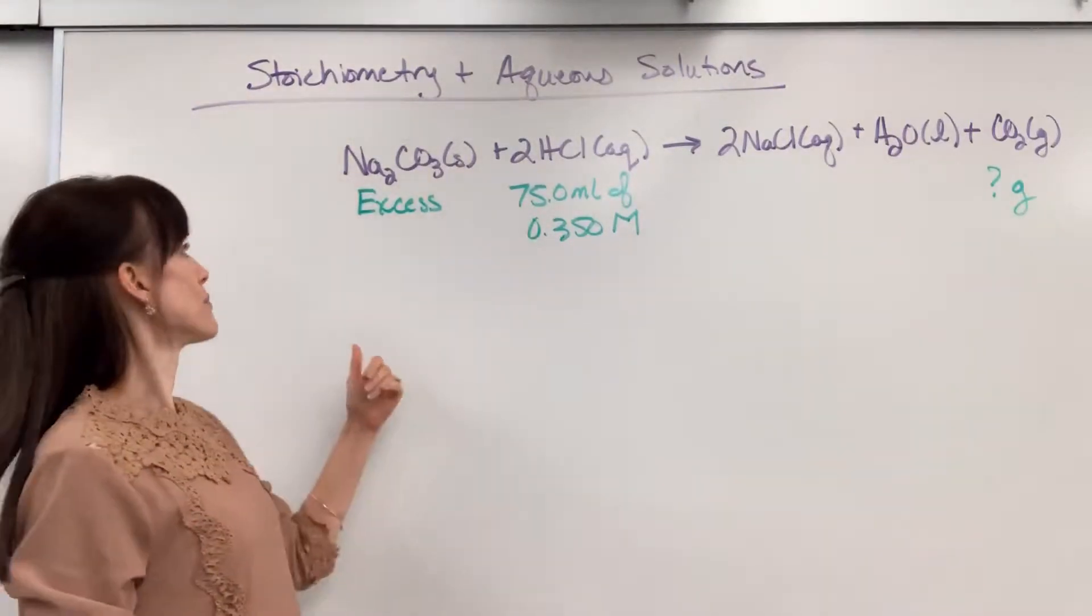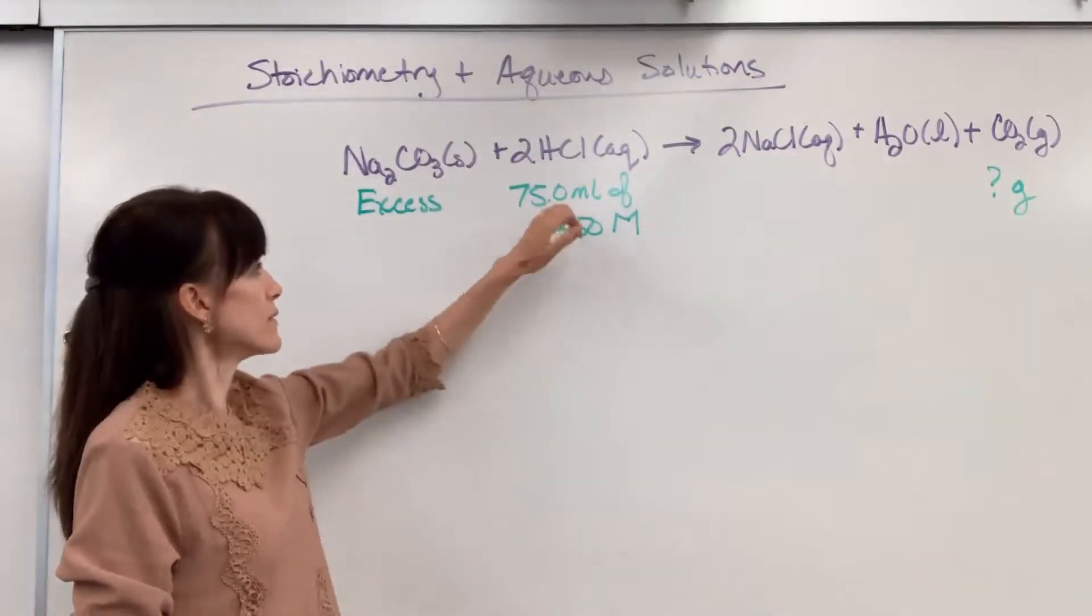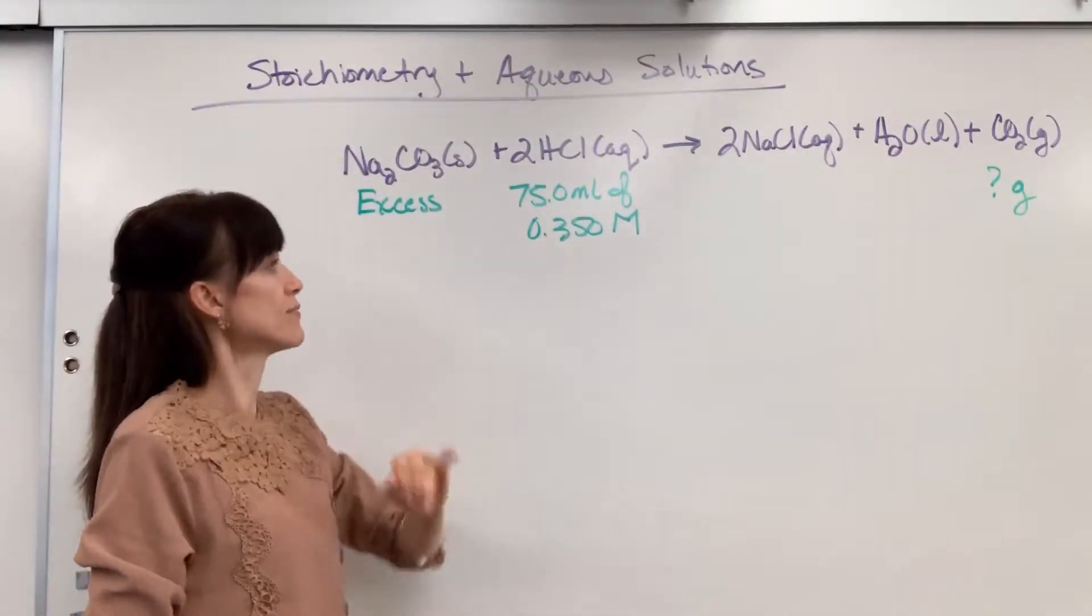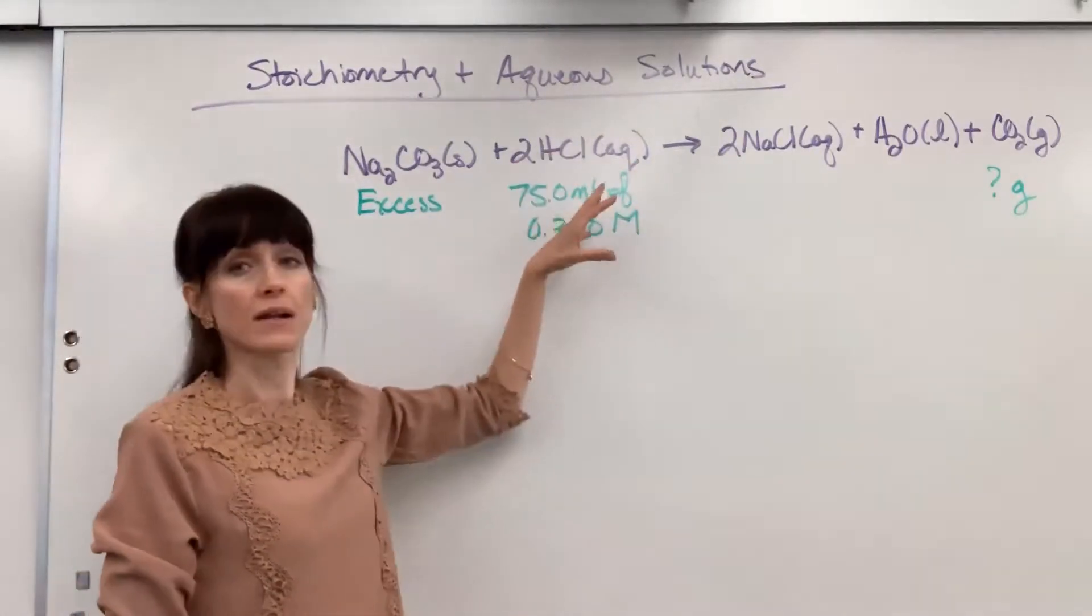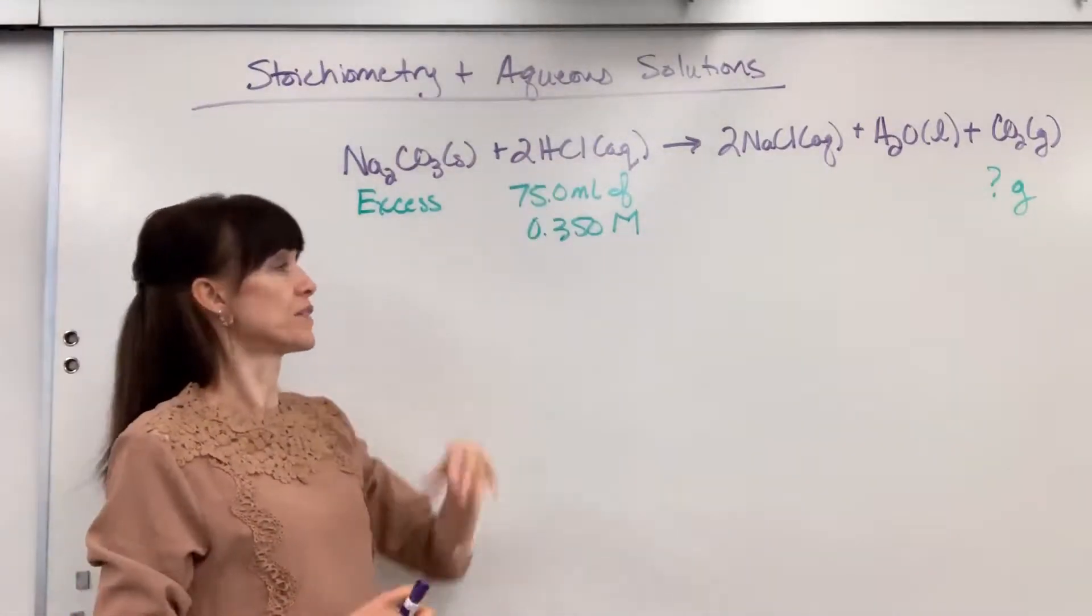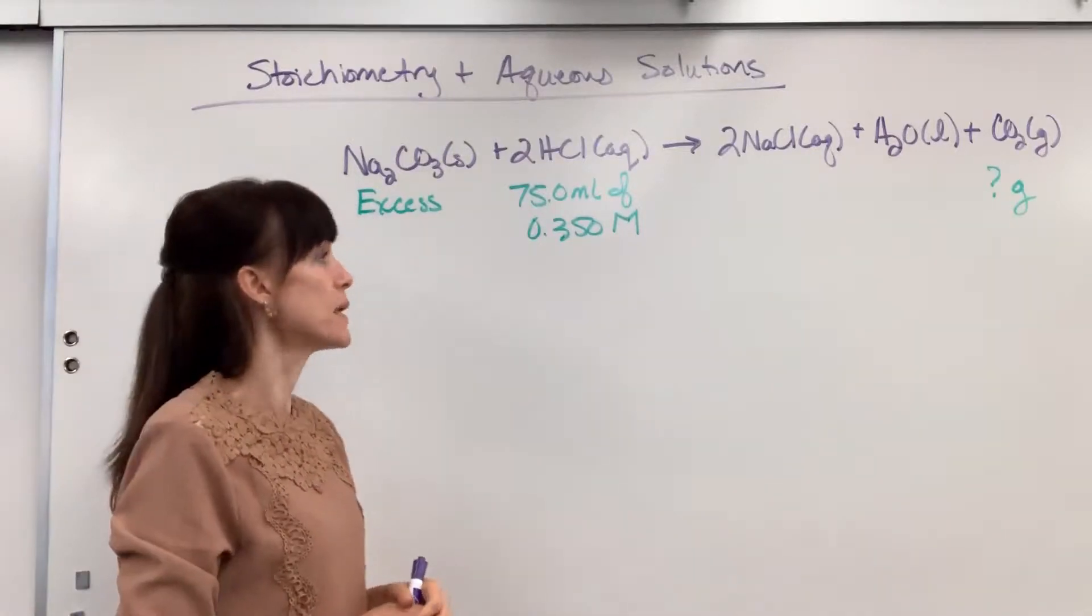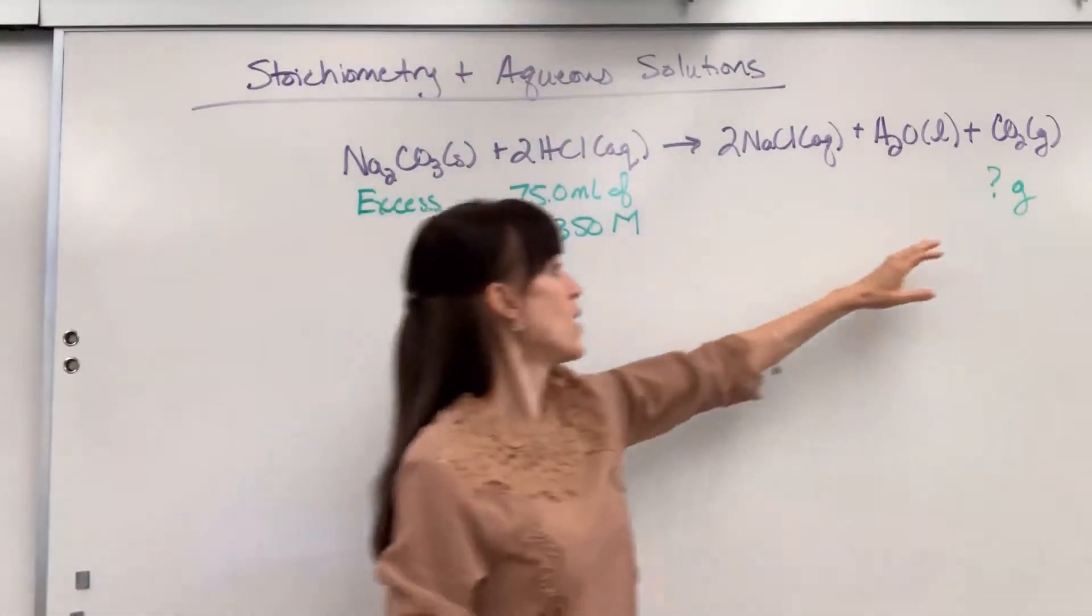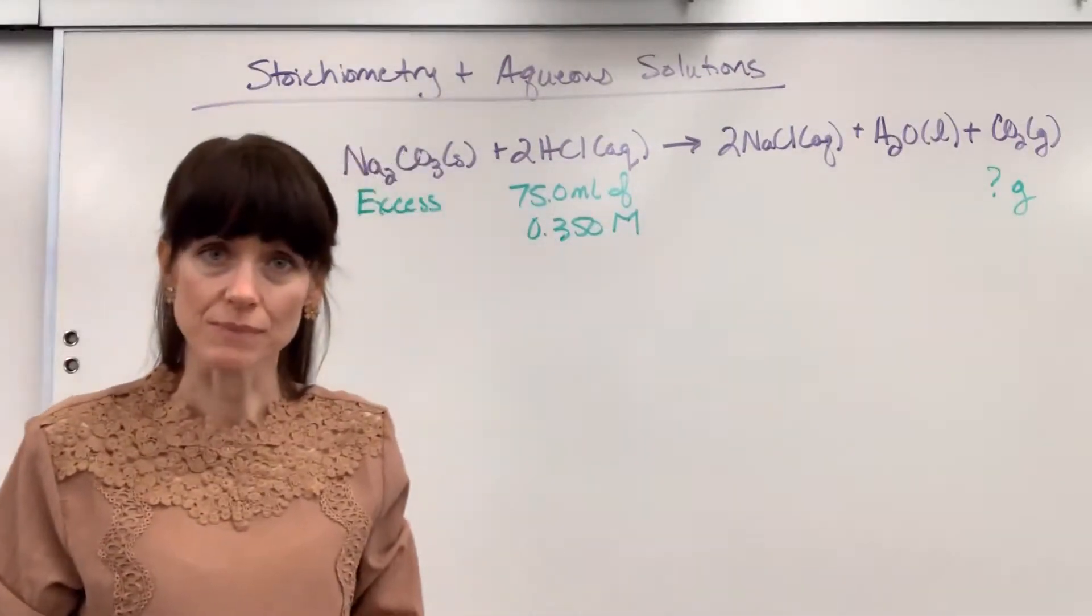In this particular problem we have an excess amount of sodium carbonate and we have 75 mils of a 0.350 molar hydrochloric acid. So this automatically is our limiting reactant. Whatever is given in excess, you have plenty of that, the other reactant will determine the amount produced. It's the limiting reactant. The question is, how many grams of carbon dioxide gas will be produced?